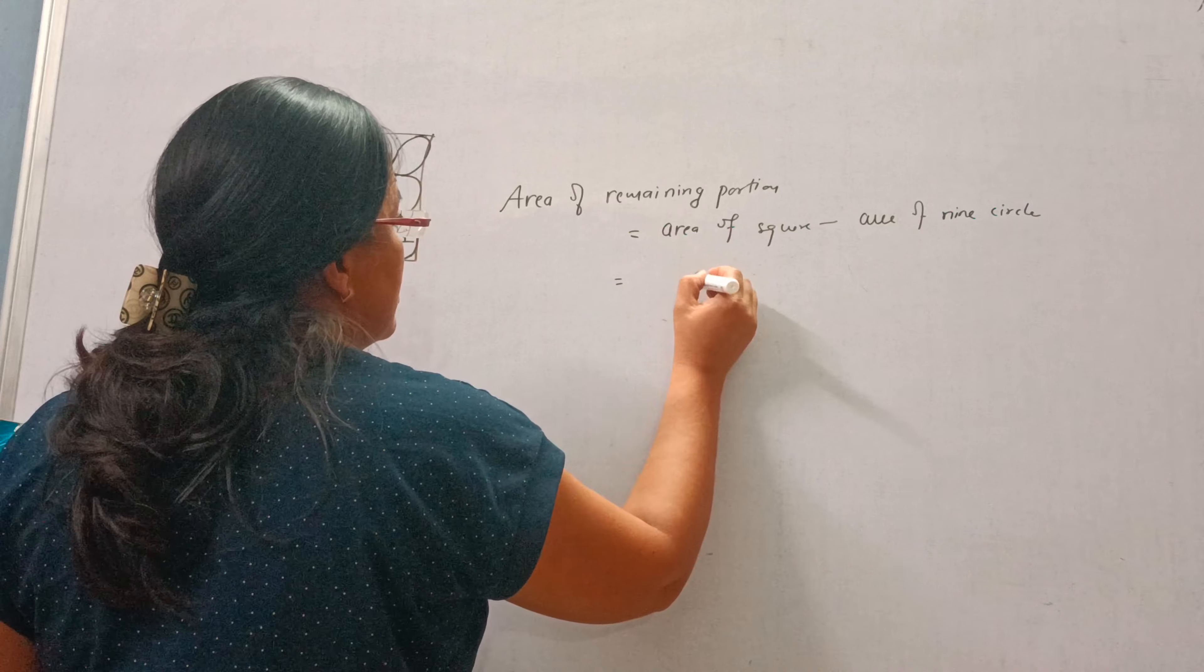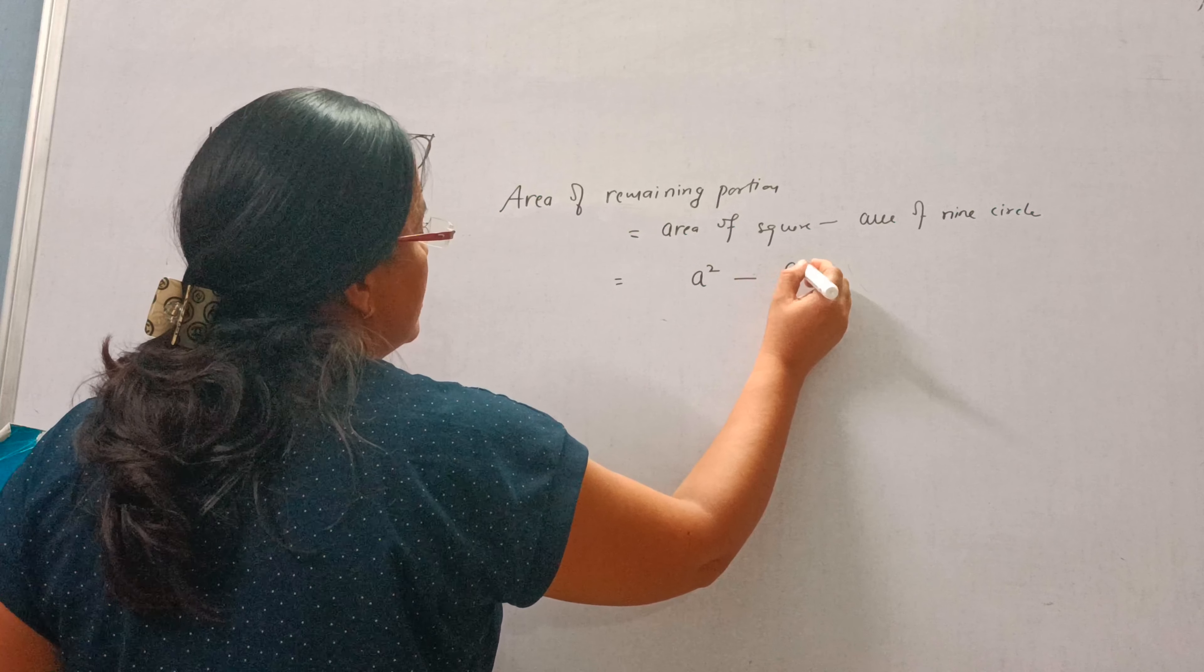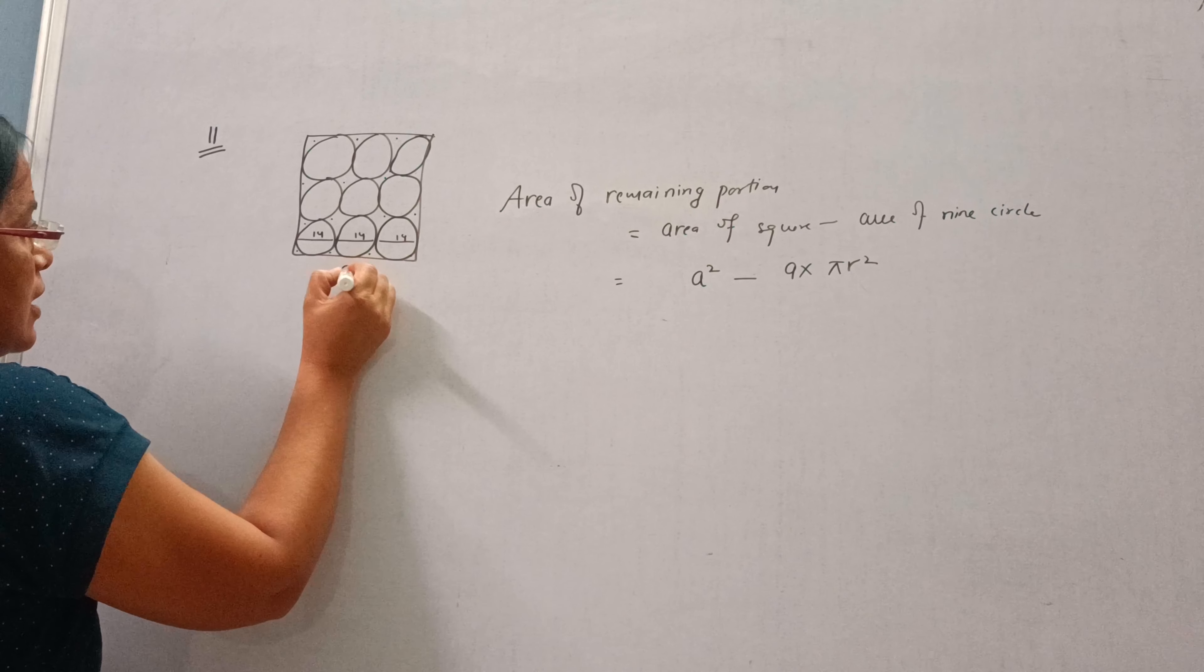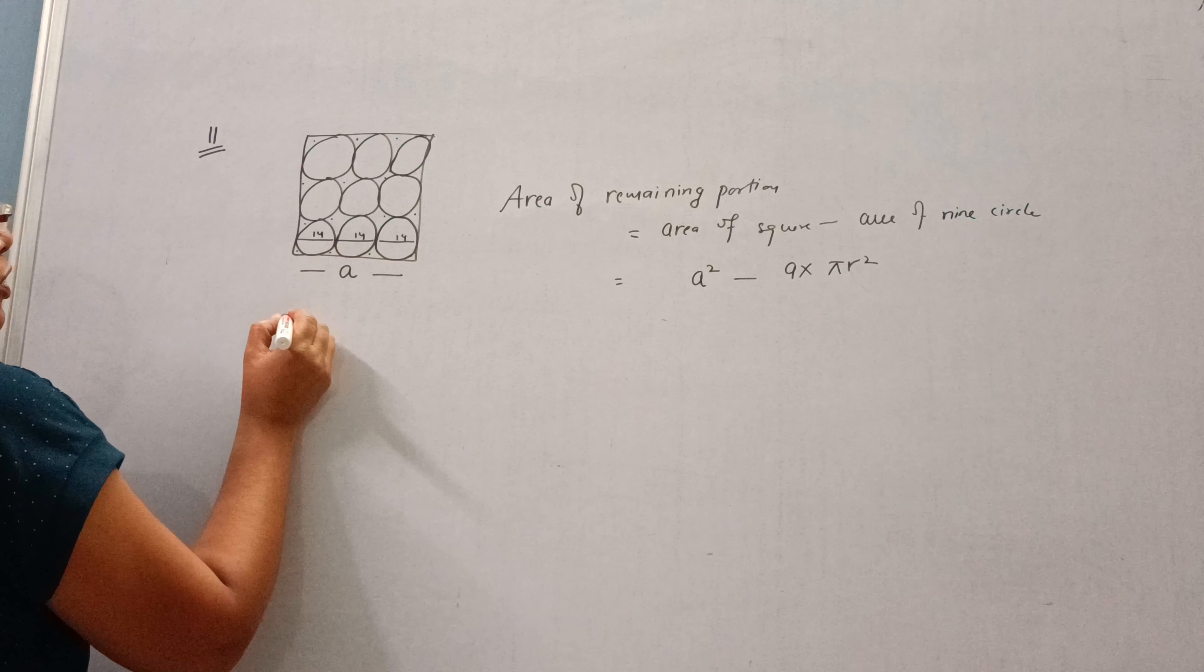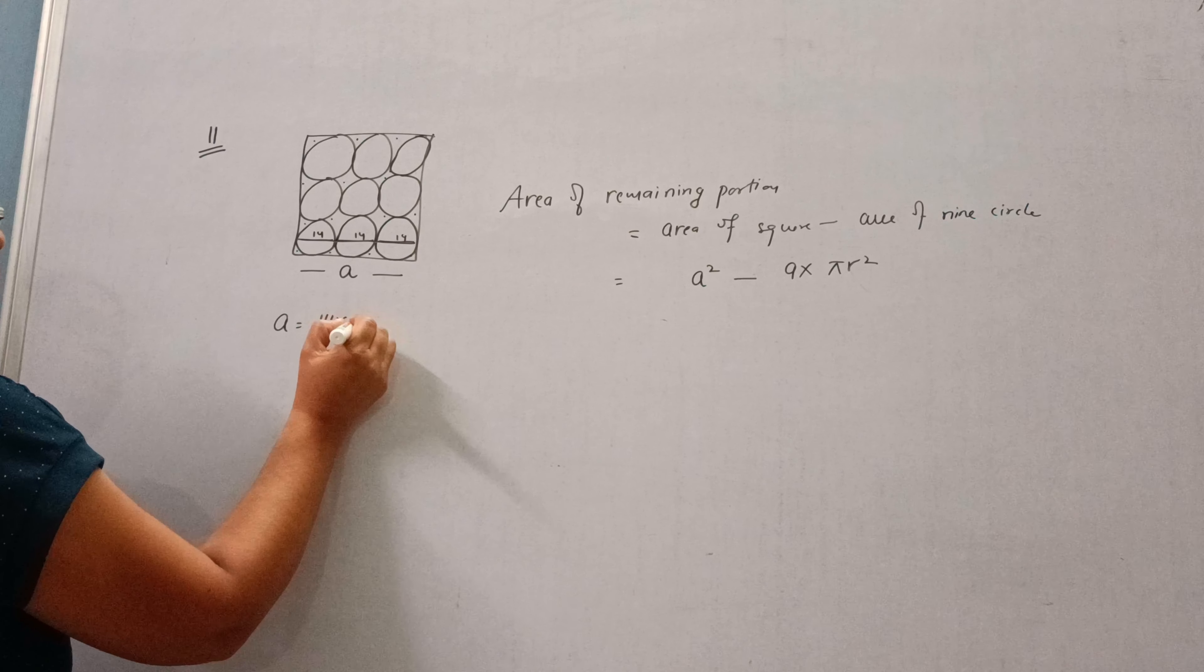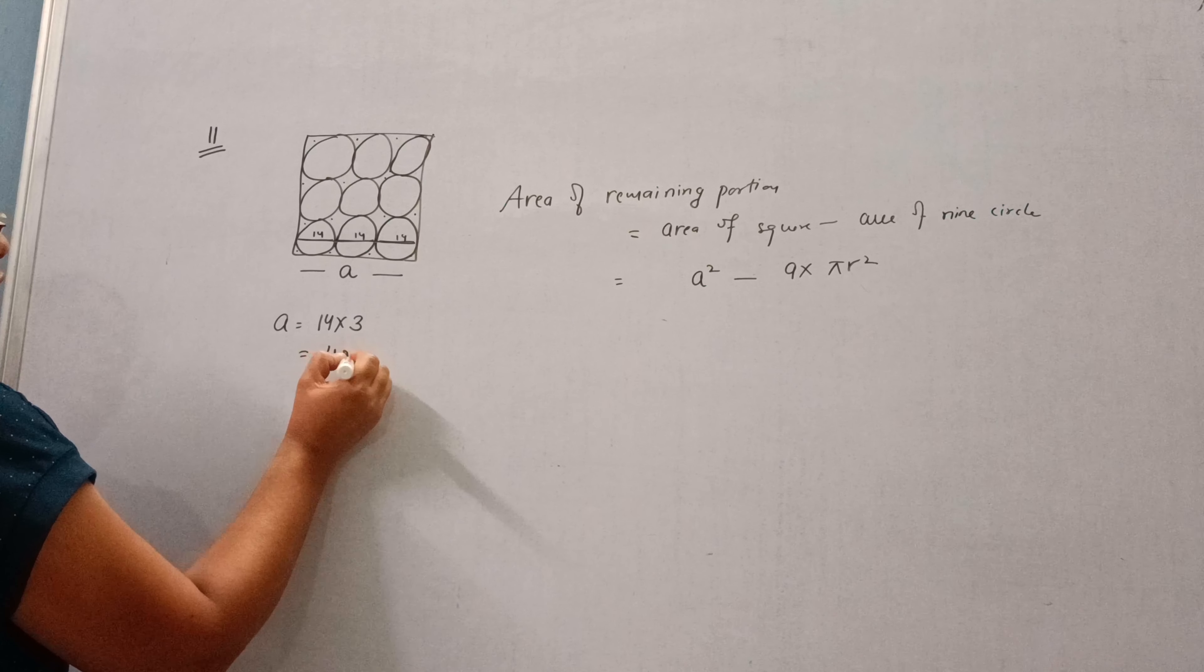Now area of square is side squared, and area of 9 circles is 9 into π r squared. What is the side of this square? The side will be 14 plus 14 plus 14, that is 14 into 3, which equals 42 cm.